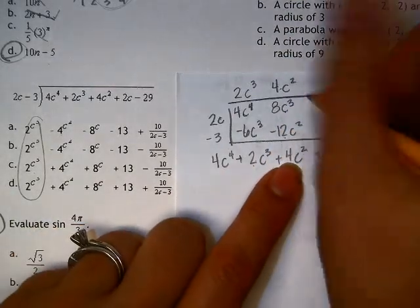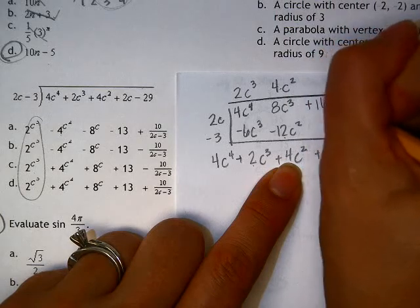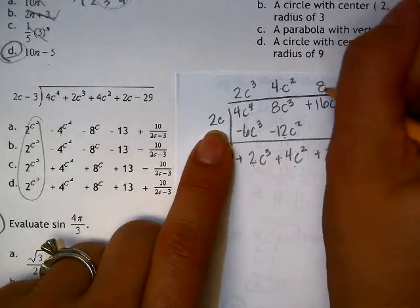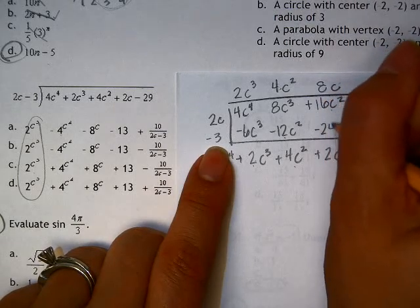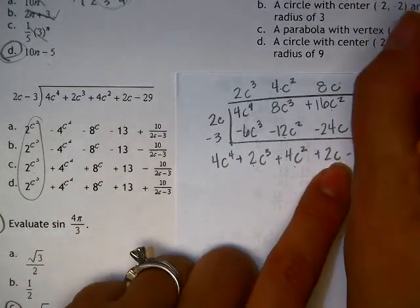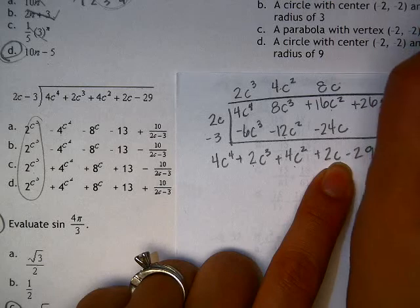And I need to have a 4, but I have a negative 12, so I need to have a 16, which means I need an 8c to make that multiply, which is negative 24c. I need a 2, so I need to have a 26 to make that happen.